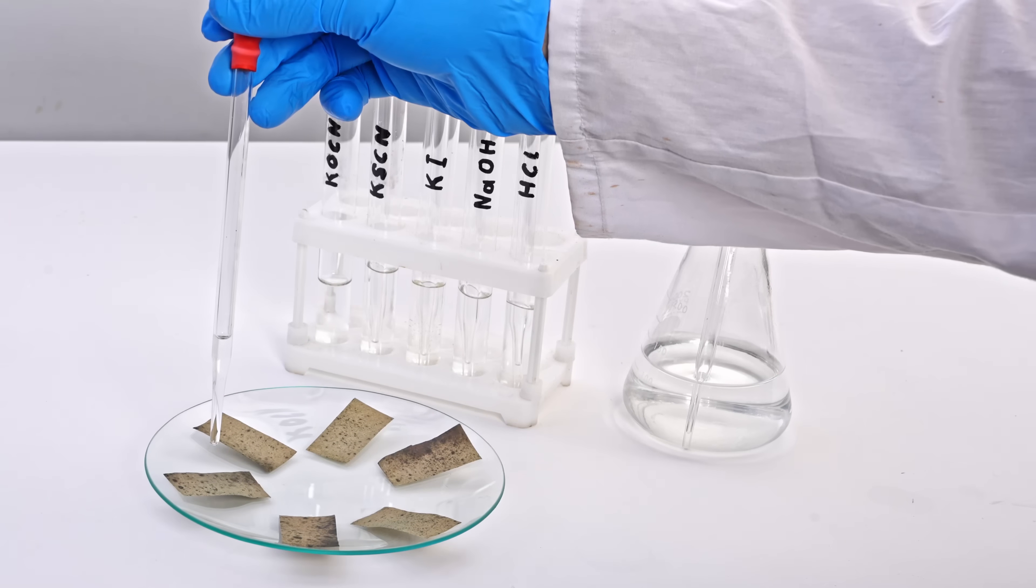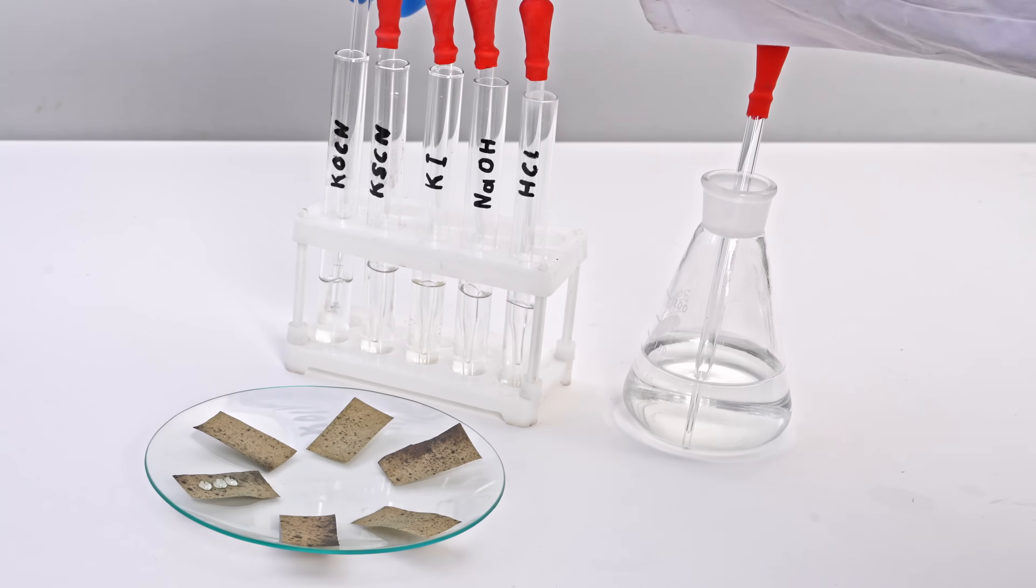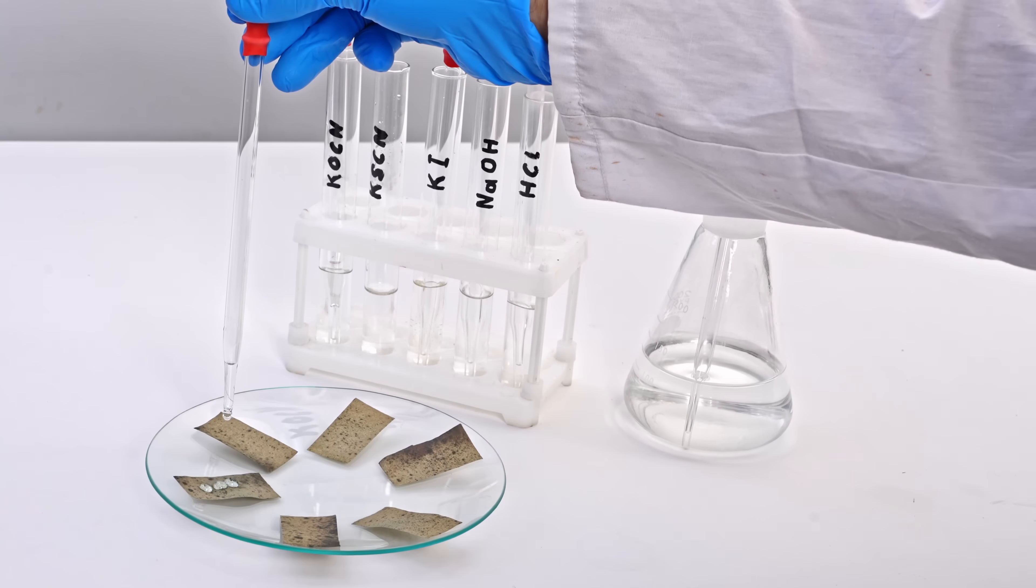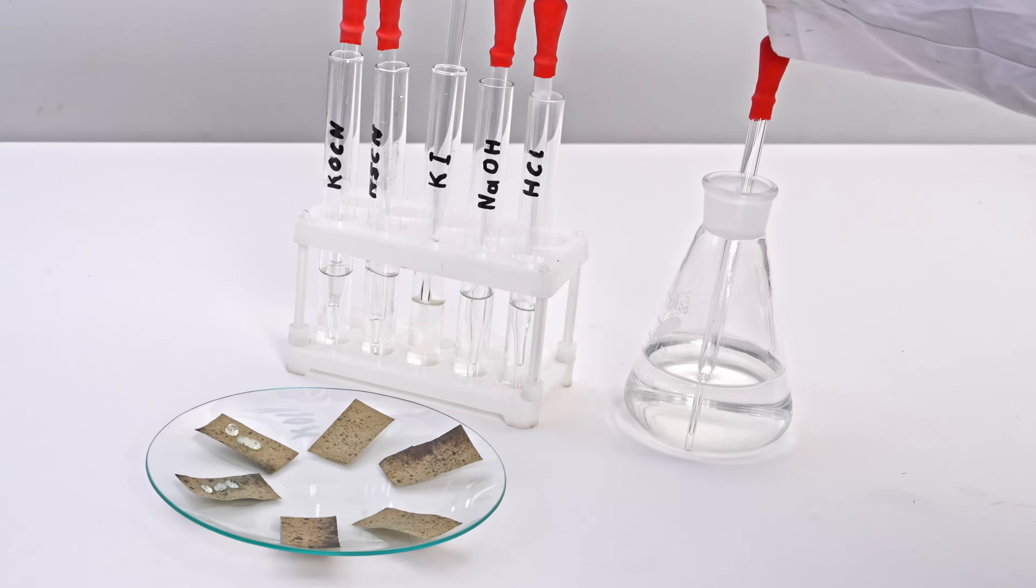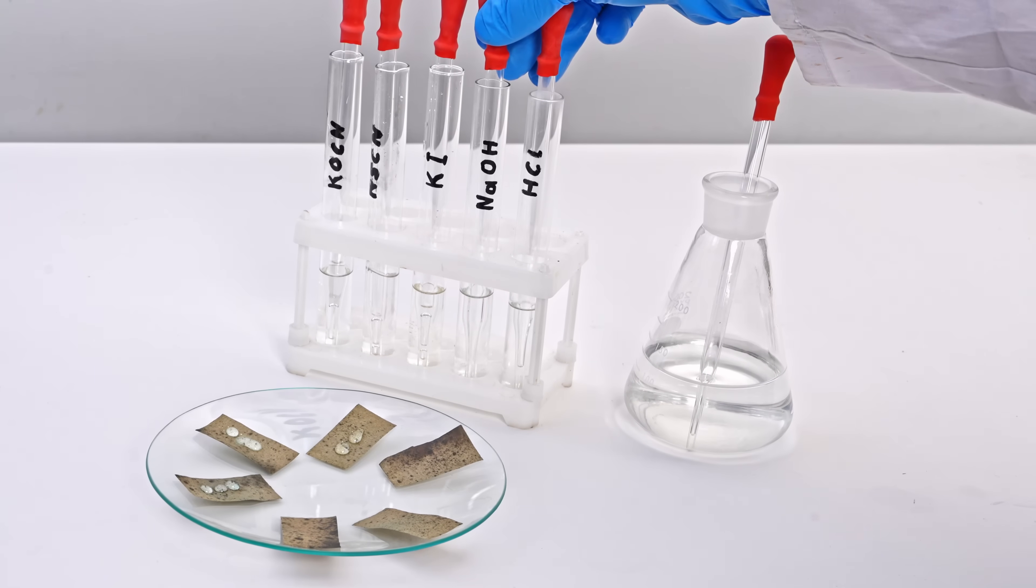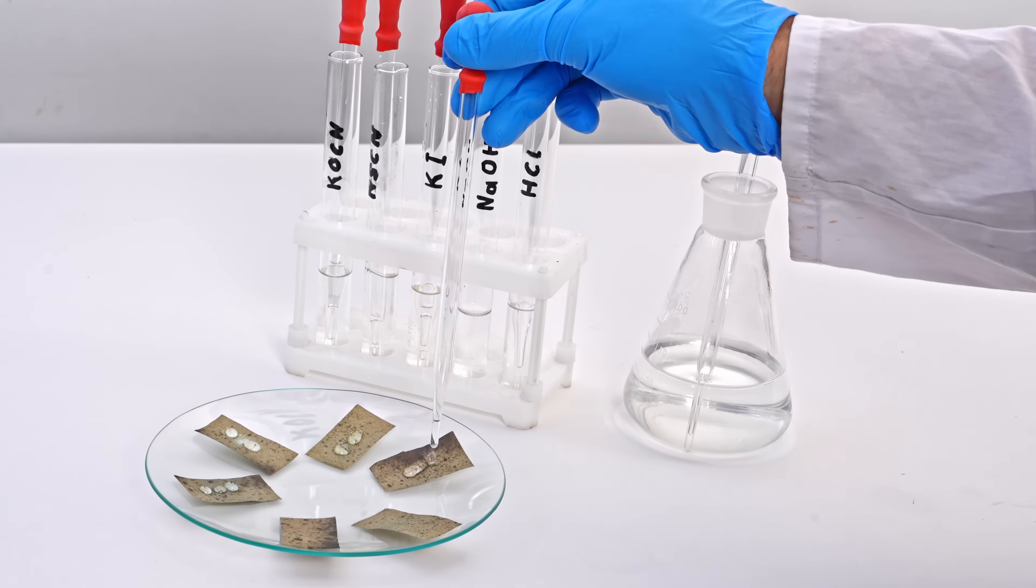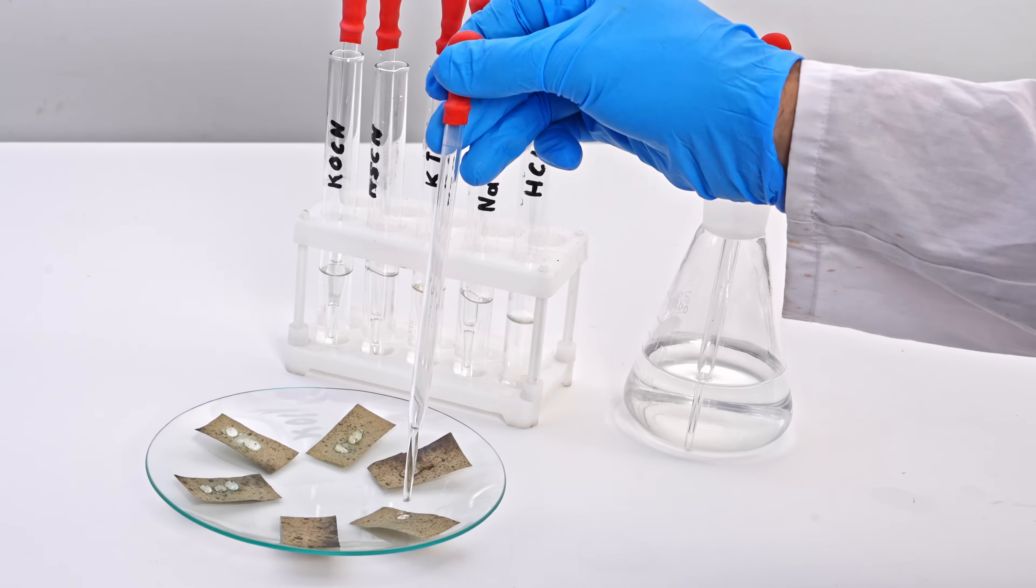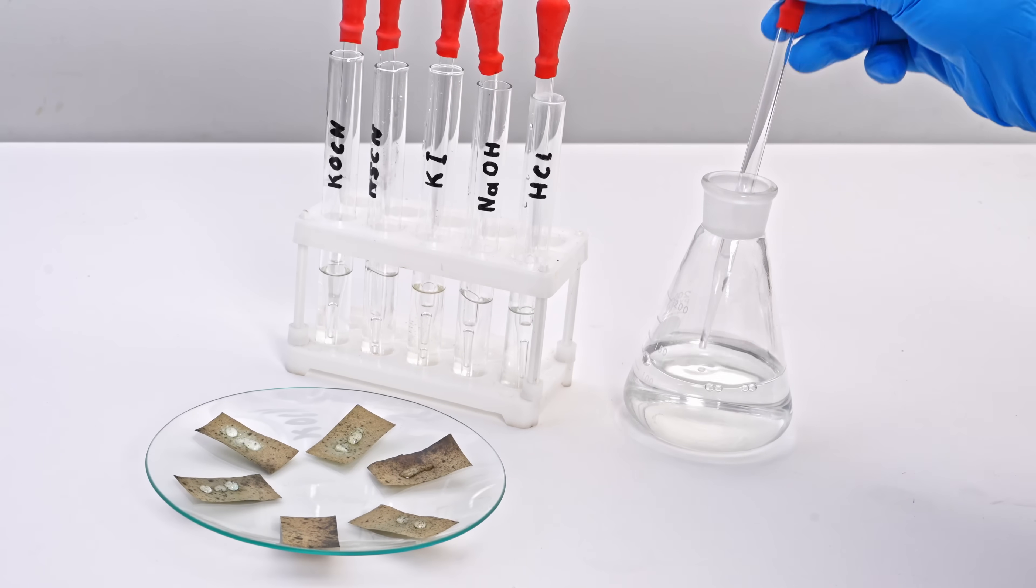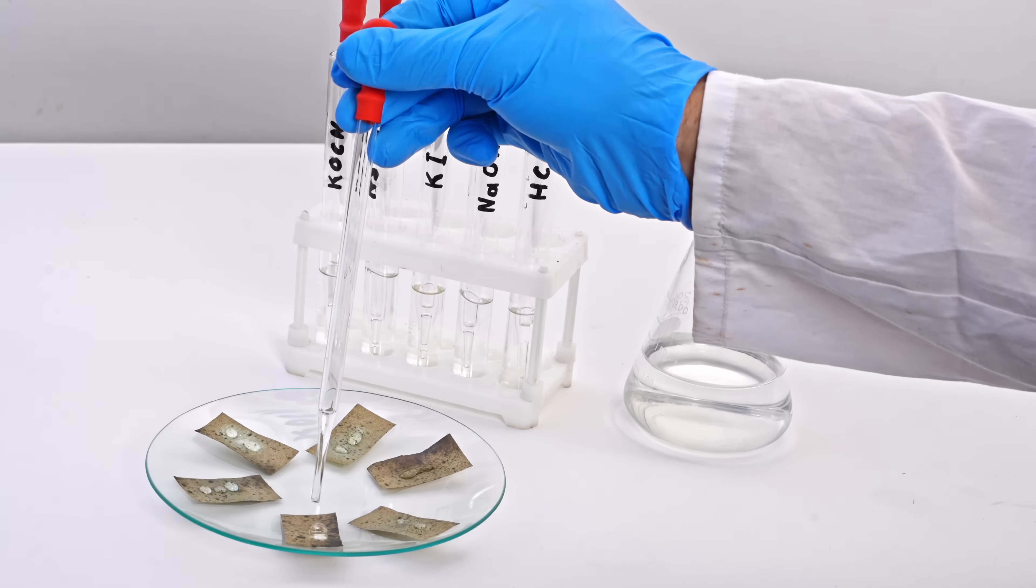To demonstrate, I'll test various solutions on the paper and only those containing cyanide ions will cause the brown color to disappear. By adding a few drops of each solution to our indicator paper, we can see that only in the presence of cyanide ions does the brown color of the paper quickly dissolve and the paper becomes white.